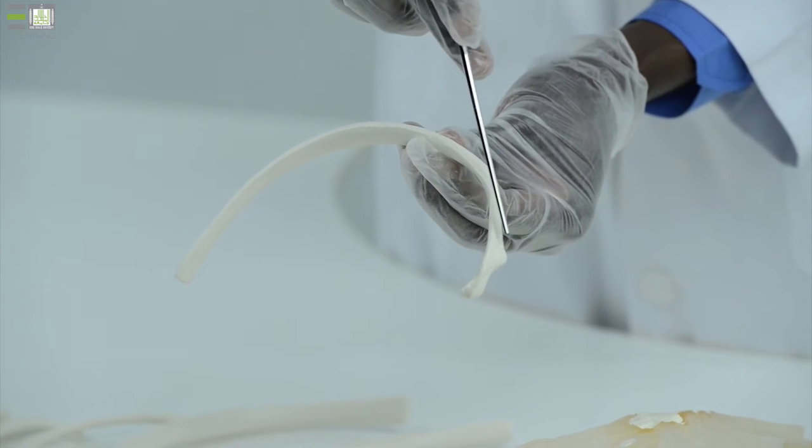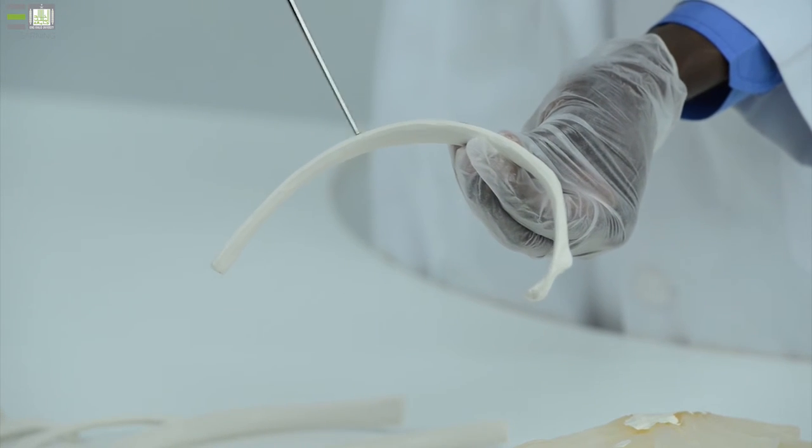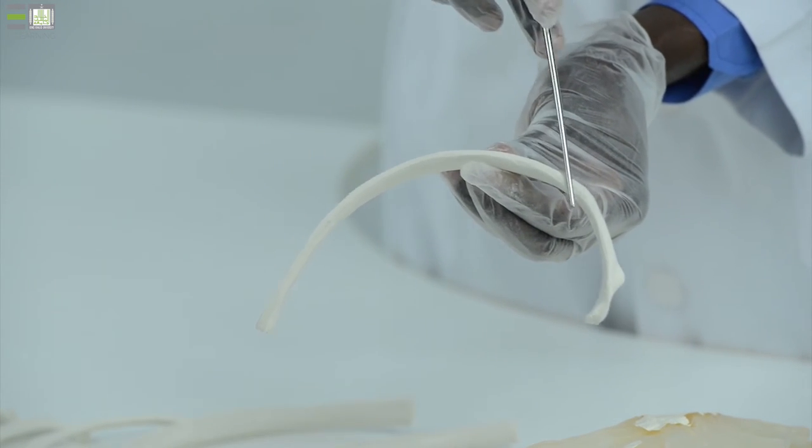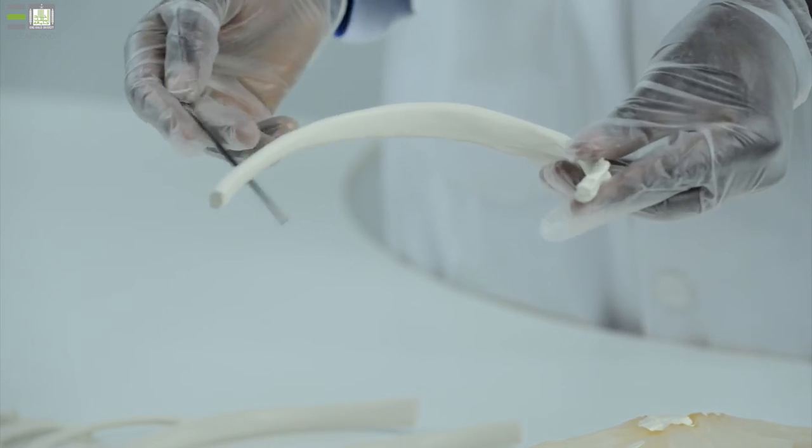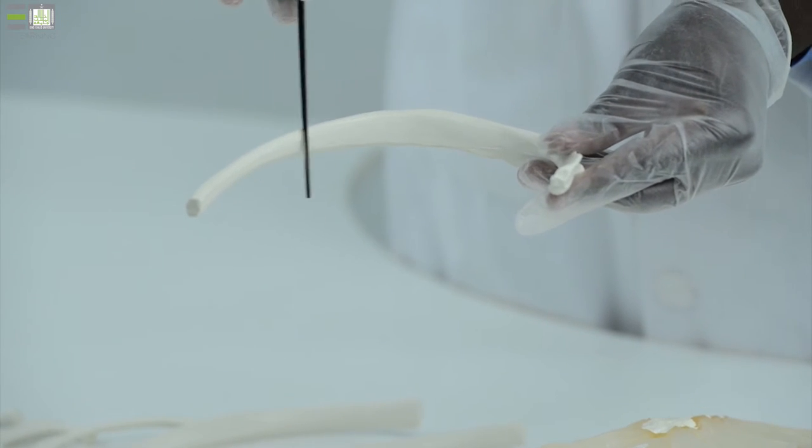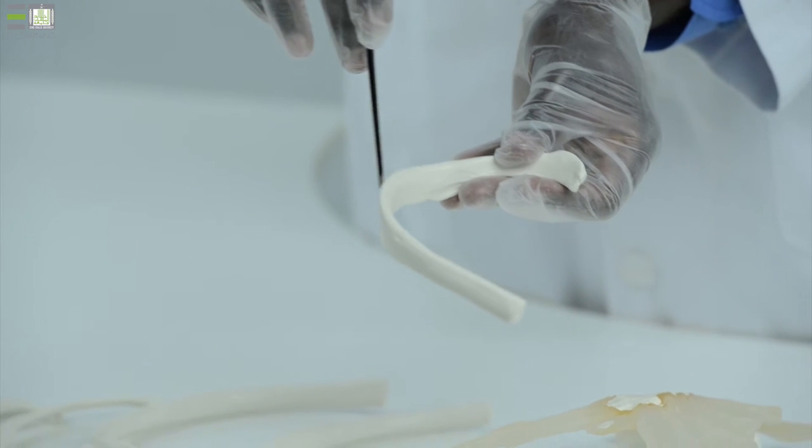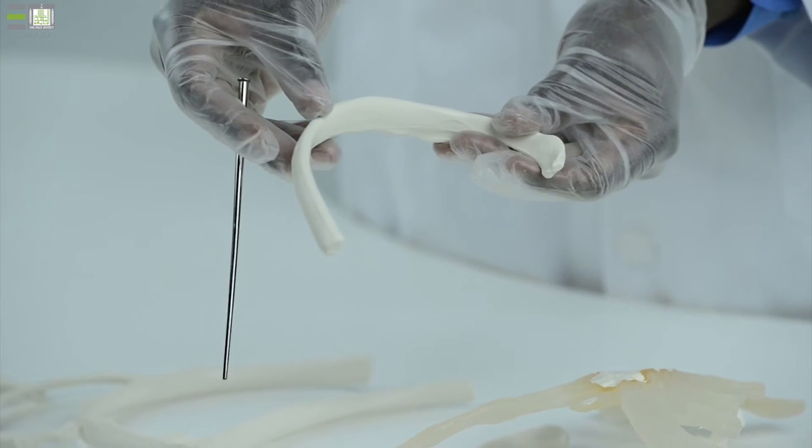Head, neck, tubercle, and shaft. In the shaft, we can see two borders, superior border and inferior border, with two surfaces. Inner is smooth, and outer, rough border.